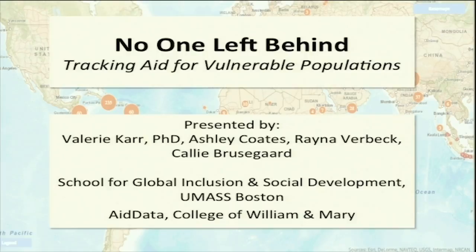Hello everyone and welcome to the session. We're here today as a collaborative effort between UMass Boston School for Global Inclusion and Social Development, AidData, the Panetta Foundation for Youth, People with Disability Australia, and Disability and Global Development Network of Canada. This side event brings together two groups to focus on foreign aid and inclusion of people with disabilities.